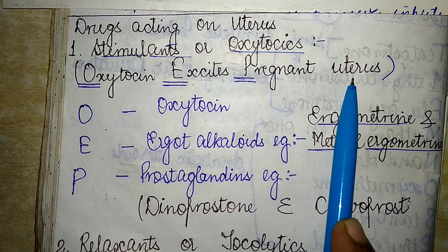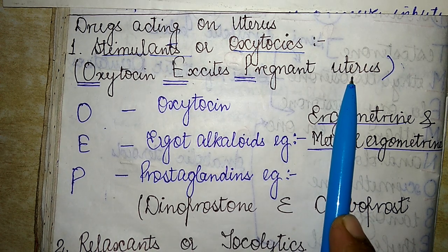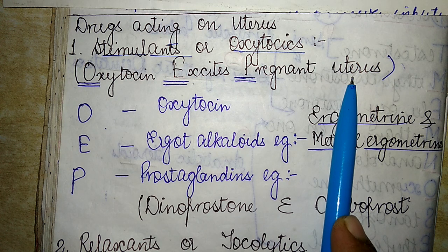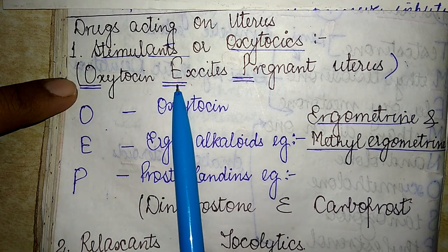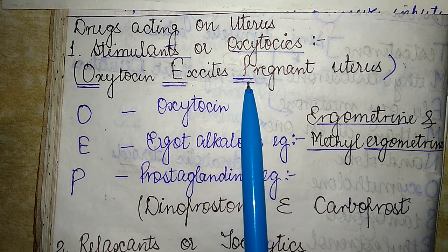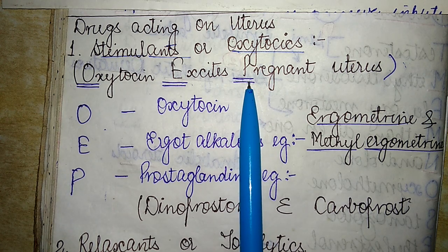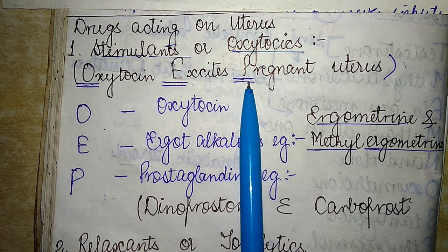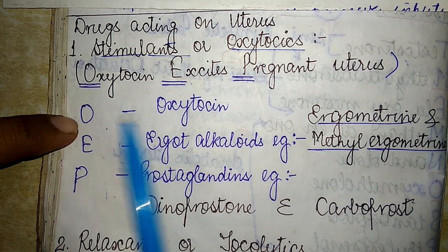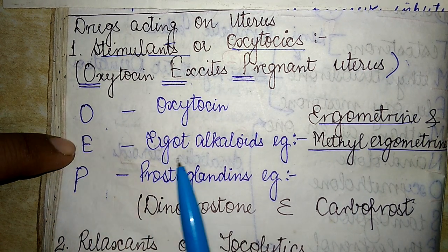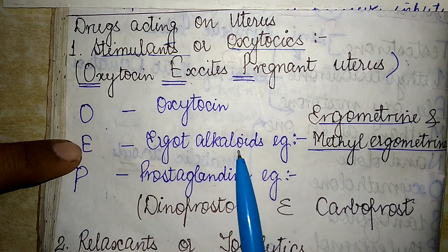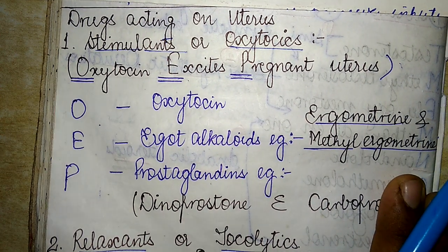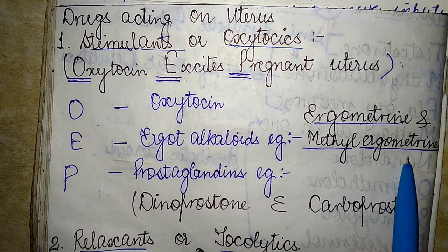By remembering this mnemonic, we can easily identify the stimulant drugs. Each initial letter refers to a class: O stands for Oxytocin, E stands for Ergot Alkaloids — with famous examples being Ergometrine and Methyl Ergometrine.